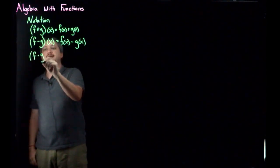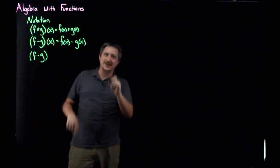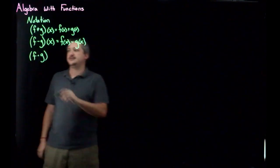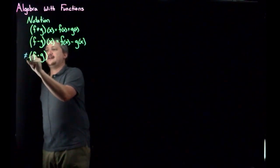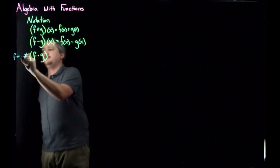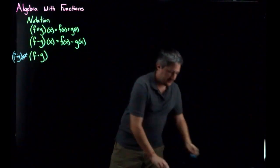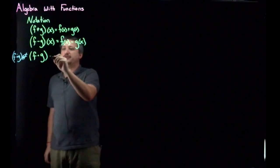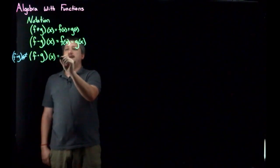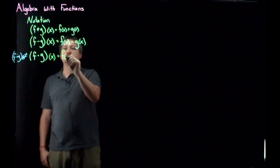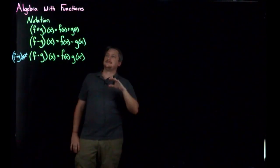F times G — and I want to be careful here to note that this is a multiply sign, not the composition open circle. This is not the same as F of G applied to X. This is a closed dot meaning actual multiplication, not composition. Make sure you draw that distinction. It works the same way: F of X times G of X.